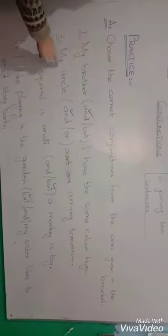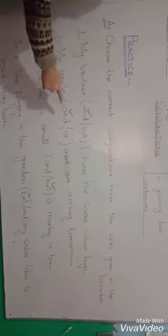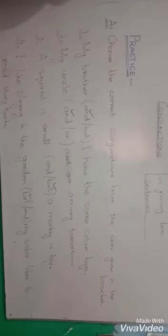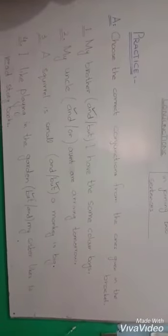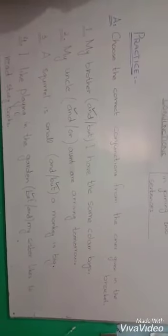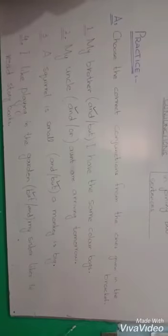Number second sentence: My uncle, bracket may and or or. Aunt are arriving tomorrow. You can add and. My uncle and aunt are arriving tomorrow.